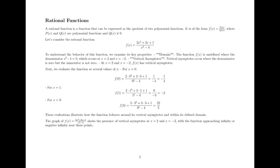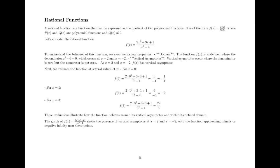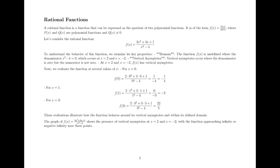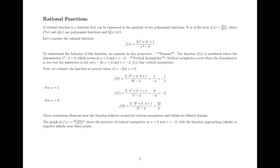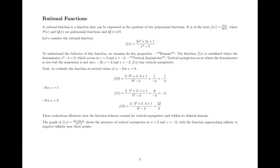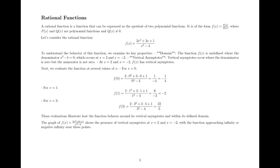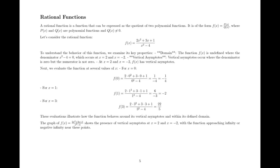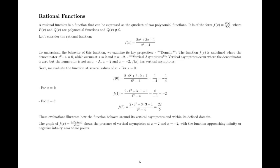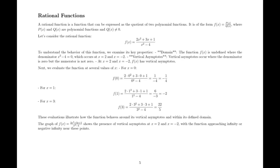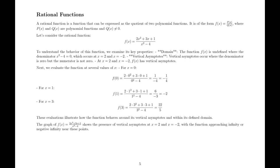To understand the behavior of this function, we examine its key properties. The domain of f(x) is undefined where the denominator x² - 4 = 0, which occurs at x = 2 and x = -2. Therefore, the domain of f(x) is all real numbers except -2 and 2. Vertical asymptotes occur where the denominator is 0 but the numerator is not 0. At x = 2 and x = -2, f(x) has vertical asymptotes.